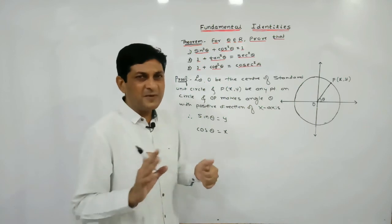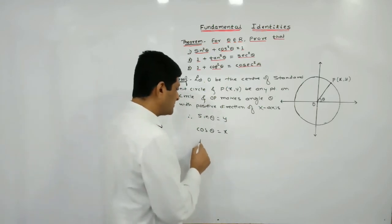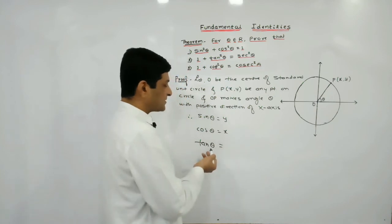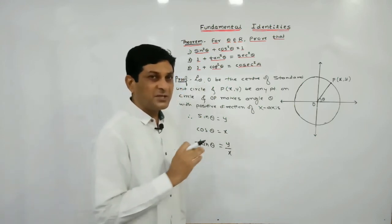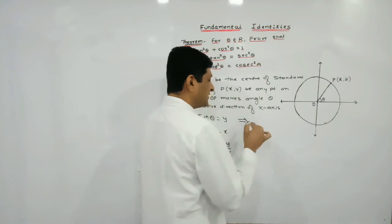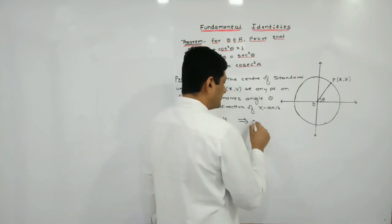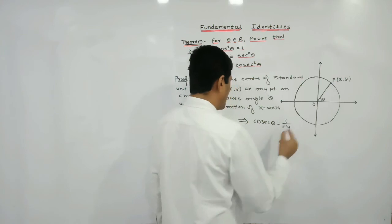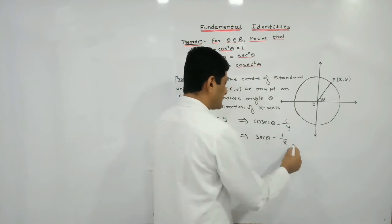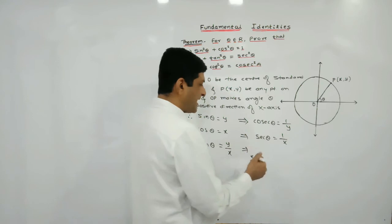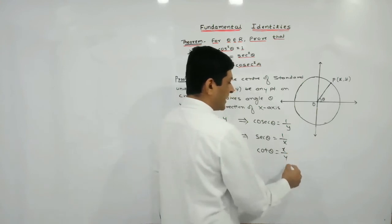Once the coordinates of a point on the standard unit circle are known, we already proved that x-coordinate means cos theta and y-coordinate means sine theta. Once the values of these two trigonometric ratios are known, we can find all remaining trigonometric functions. Tan theta equals sine upon cos, which means y upon x. By taking reciprocals: cosec theta = 1/y, sec theta = 1/x, and cot theta = x/y.